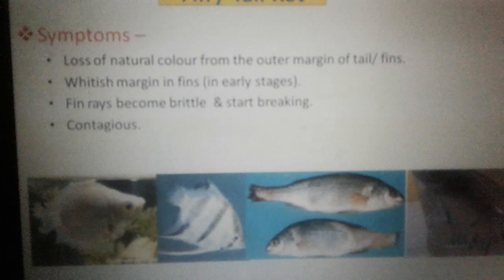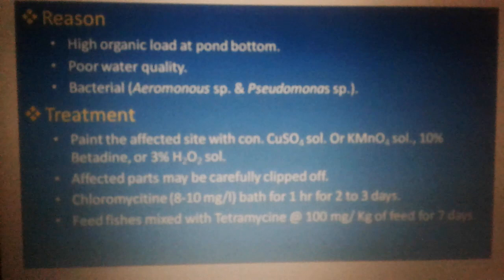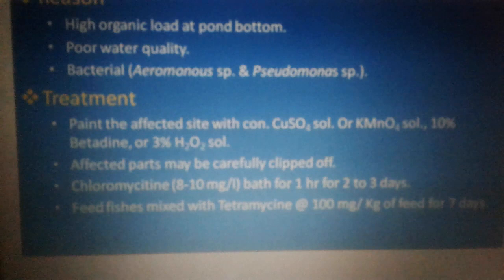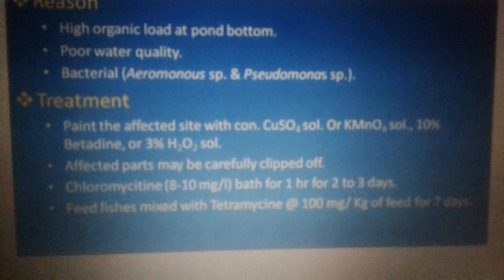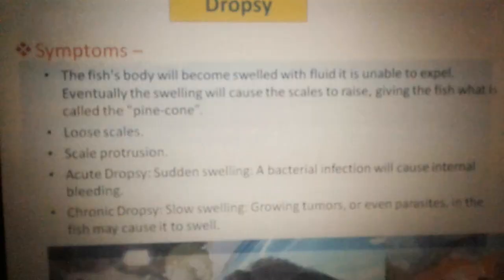Next is fin or tail rot. There is loss of natural color, fin rays become bristle-like and start breaking. The reasons are high organic load, poor water quality, and bacteria — Aeromonas or Pseudomonas species. Treatment is mainly by painting the affected parts with CuSO4 or K-MnO4. Betadine or H2O2 can also be used and affected parts can be clipped off. Chloromycetin and tetramycin can also be used.